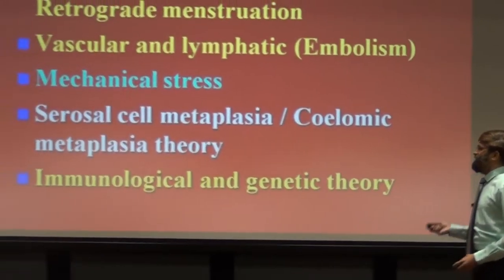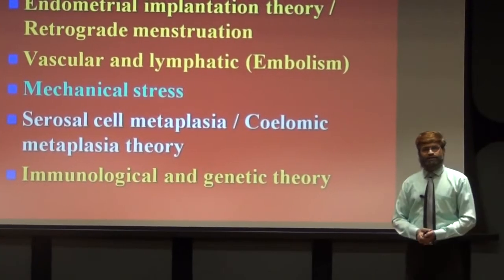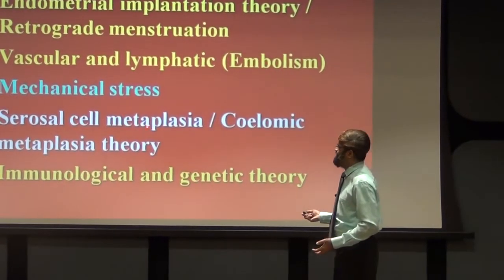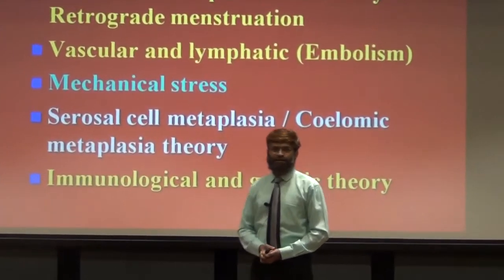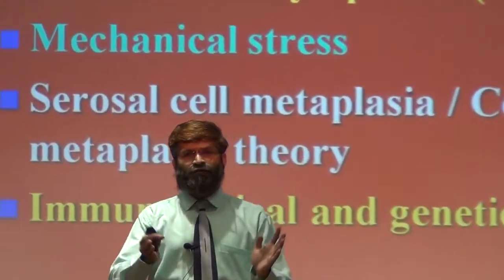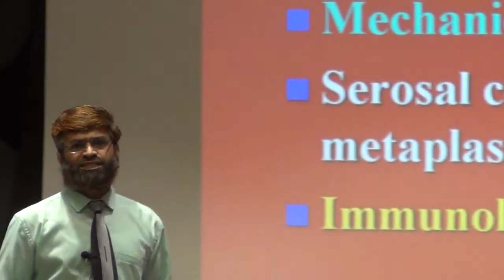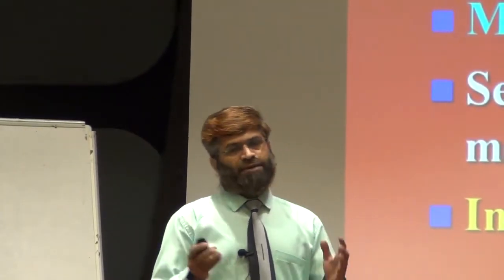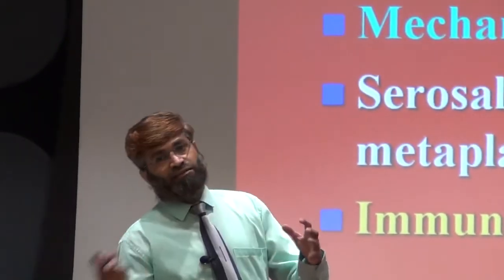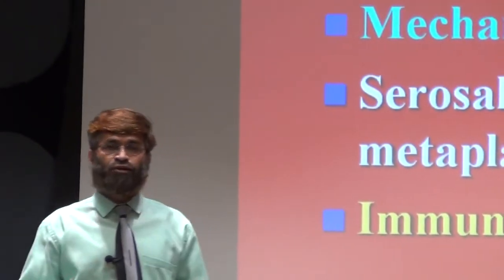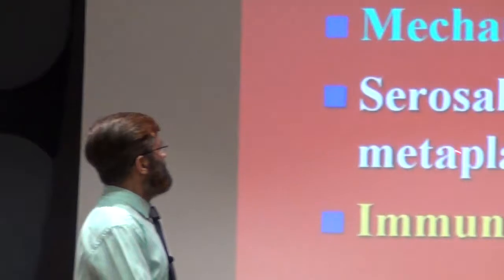The fourth is serosal cell metaplasia, or coelomic metaplasia theory. Metaplasia means the conversion of a cell from one form to another. This theory explains that in some distant organs — like for example the liver — hepatocytes, due to some unknown reason such as irritation or infection, may get converted and start functioning like endometrial tissue. So the cells of the liver may start converting and functioning like endometrial tissue.